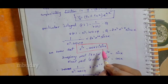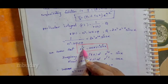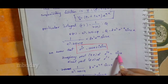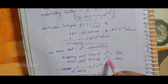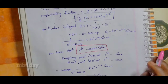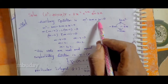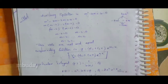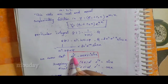We use Euler's formula: e^(ix) = cos x + i·sin x. Taking the imaginary part, the imaginary part of e^(ix) is sin x, and the real part of e^(ix) is cos x.